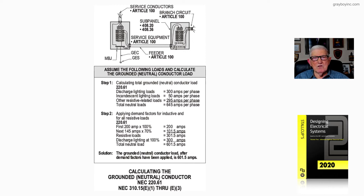In step one, we have electrical discharge lighting at 300 amps, incandescent at 50 amps, and other resistive loads at 295 amps. When we total those loads up, it's 645 amps.